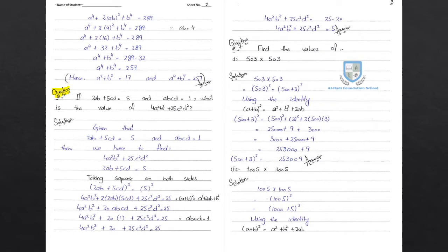Next, question number 6 of Exercise 9. Question number 6: if 2ab plus 5cd is equal to 5, and abcd is equal to 1, what is the value of 4a square b square plus 25c square d square? In the solution, given that 2ab plus 5cd equals 5.